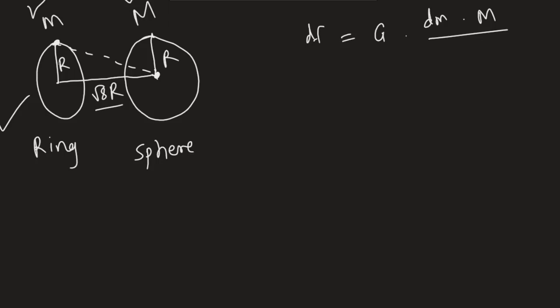You can see the radius of the ring is r and the distance between the centers of this ring and the sphere is square root of 8r. So that distance is going to be 3r.